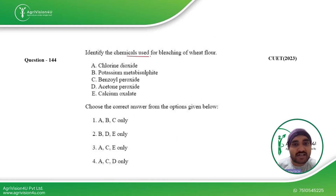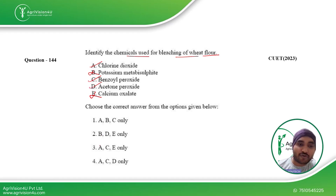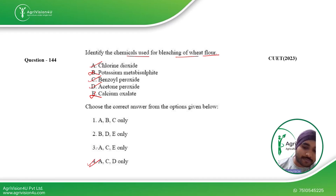Classify the chemicals used for bleaching of white wheat flour. Chlorine is used; potassium metabisulfite is not used; benzoyl peroxide is used; acetone peroxide is also used; and calcium oxalate is not used. Therefore options A, C, and D are correct, making the fourth option the right answer.